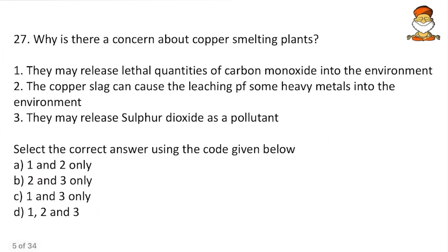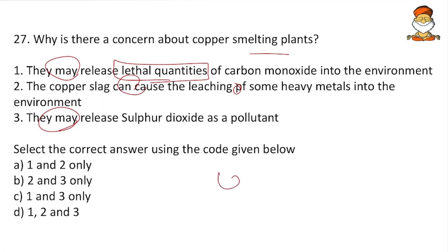Question 27: Why is there concern about copper smelting plants? Options are: they may release lethal quantities of carbon monoxide; copper slag can cause leaching of heavy metals into the environment; and they may release sulfur dioxide as a pollutant. The word 'lethal quantities' sounds extreme. Carbon monoxide is a poisonous gas and even small amounts can be lethal, so the answer could be all of the above, but we'll go with two and three only and see what UPSC gives.